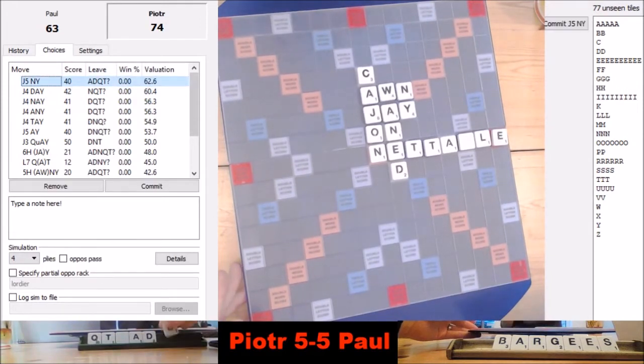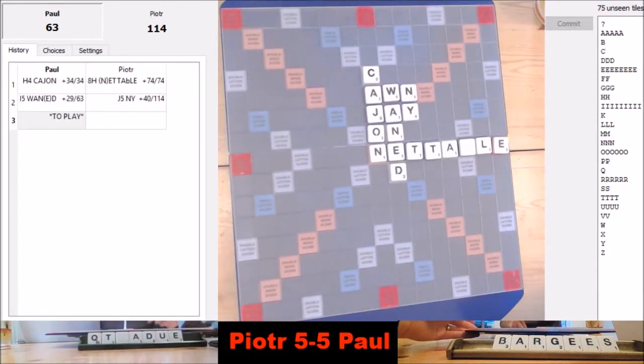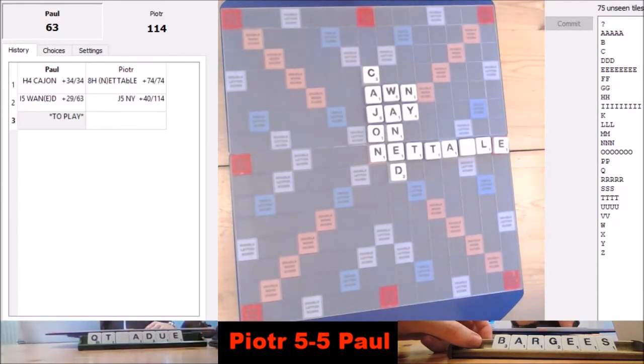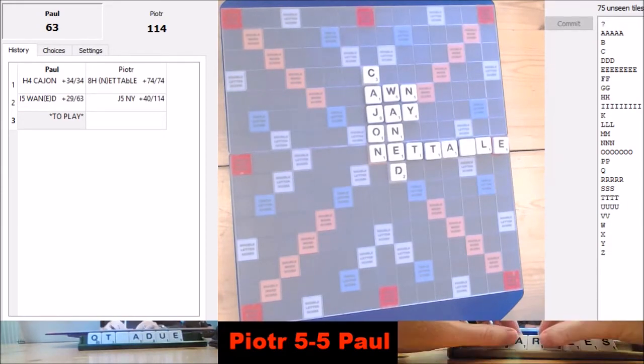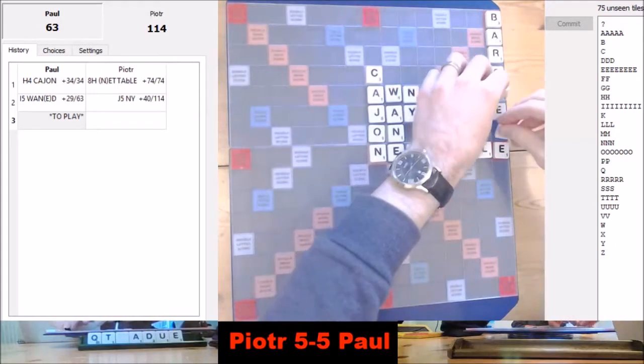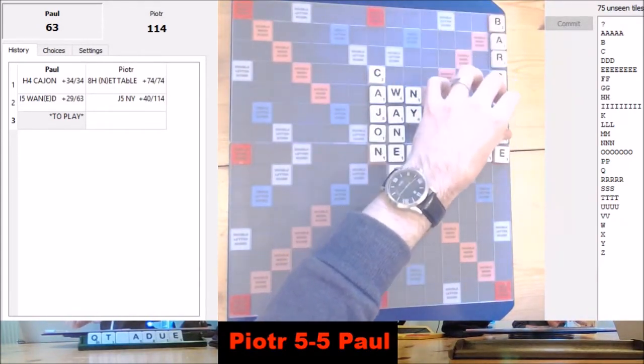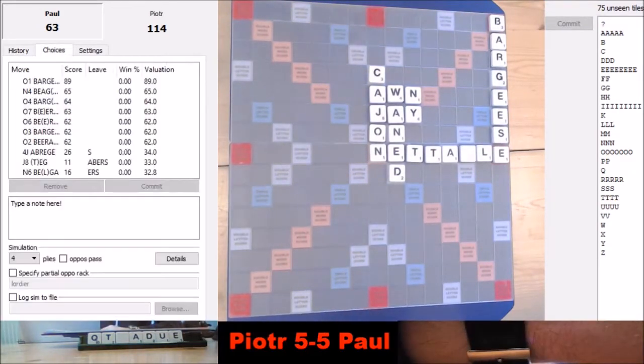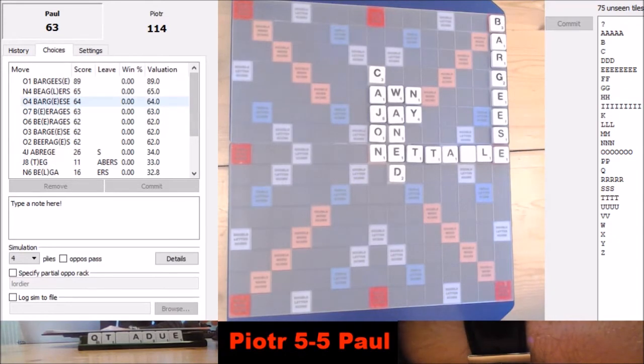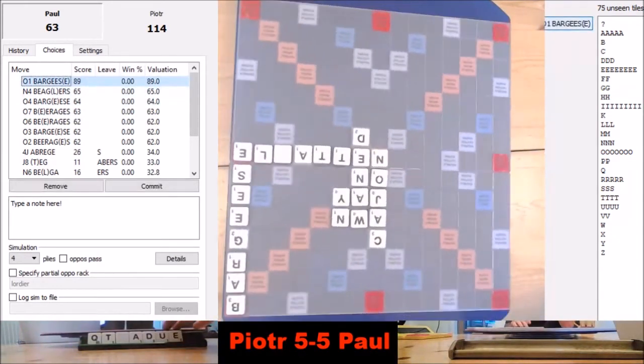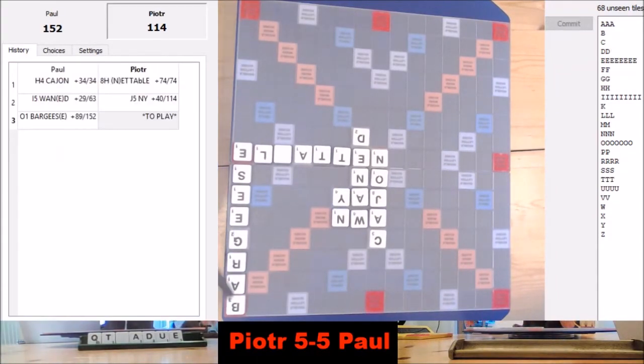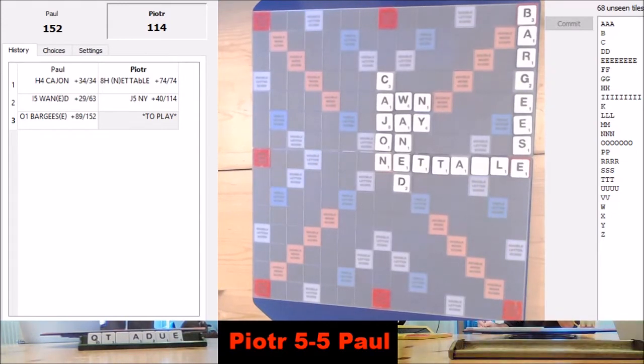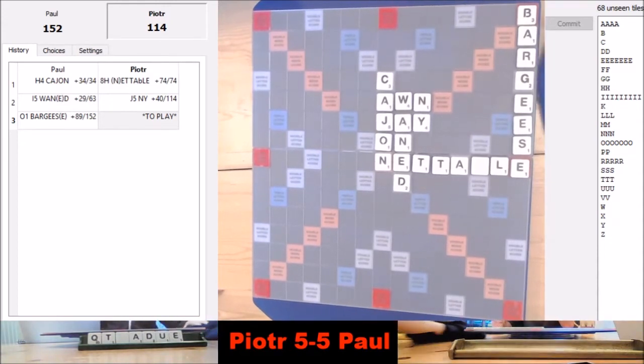Paul has lined up his orphan bonus, Bargees. Well, one of his orphan bonuses, there are three of them. He may be slightly annoyed because his double double was blocked, Absterge. But nope, he's going for the flappy bird, the Bargees. So now Paul takes a slight lead. And look at Piotr's rack, it's so nice. That's all I want to say about it, it's nice.